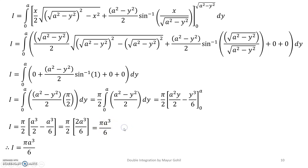Simplifying further gives the final answer: i = πa³/6. The only difficulty was applying the expansion formula — these complicated-looking expressions do simplify down easily. So i = πa³/6 is the final answer. Let us see one more example.